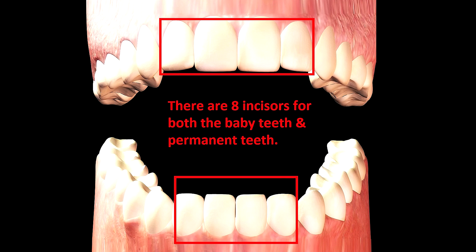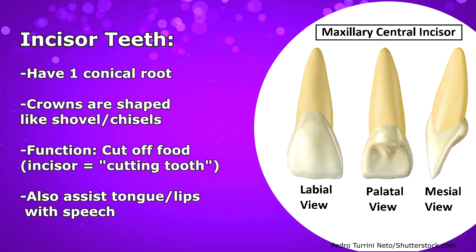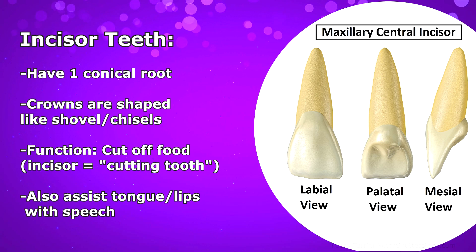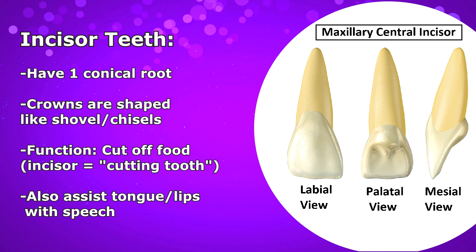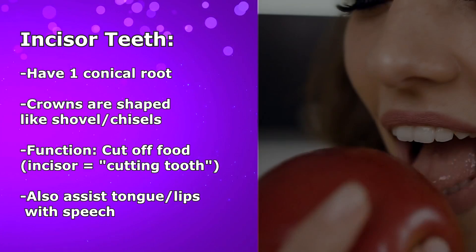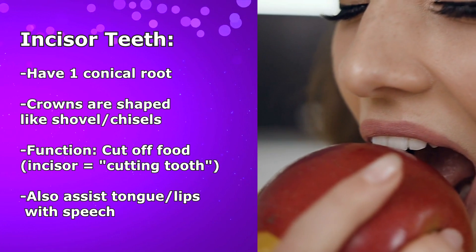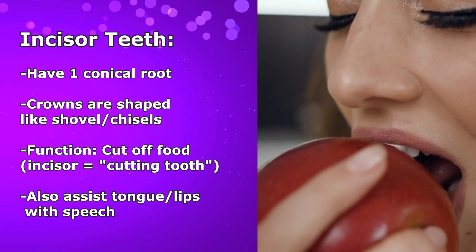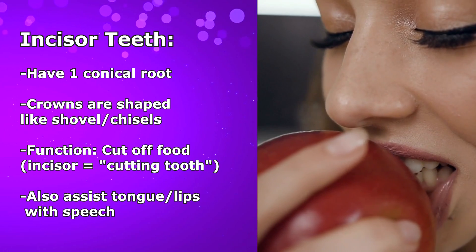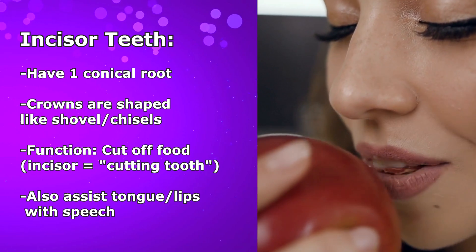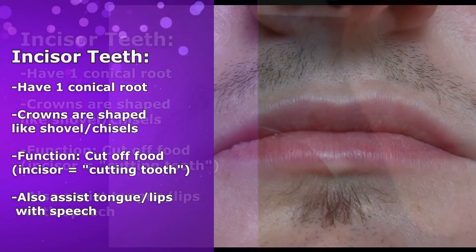Now when you add the incisors on both arches, you get a total of eight incisors for both the baby teeth and the permanent teeth. Incisors have only one conical root, and their crowns are shaped like small chisels or shovels, and the main function of the incisor tooth is for cutting off food. In fact, the word incisor comes from an old word that means cutting tooth.